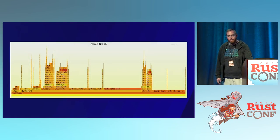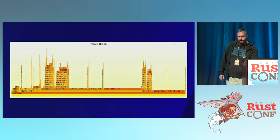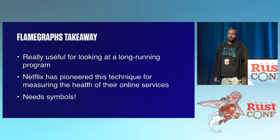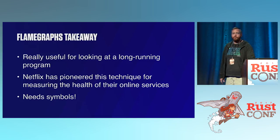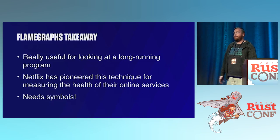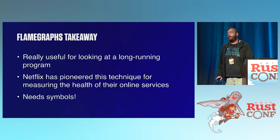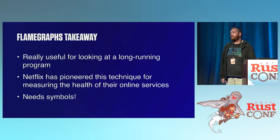Here's the multi-threaded benchmark flame graph — much more complex as you'd expect. You can see we've got a couple of threads and a mutex. We'll drill into parts of this from time to time to make sure things look sane. It's really useful for long-running programs — since what we ship is a proxy running 24/7, it's nice to compare how things look at time T versus 30 minutes later. Netflix pioneered this technique and uses it to measure the health of all their online services. Remember: you have to add symbols, otherwise you'll get a bunch of addresses in the flame graph.